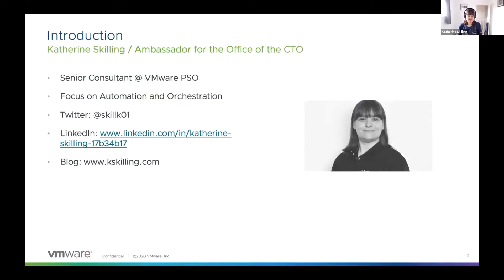My name is Catherine Skillen. I'm a senior consultant in the Northern EMEA PSO team at VMware, and I've been with the company for about four and a half years. I focus primarily on automation and orchestration technology — VRA and VRO — but I have a background that covers vSphere, SRM, and going all the way back to end user support doing things like printer jams. I'm on Twitter, LinkedIn, and I have a blog — you can also contact me via email.